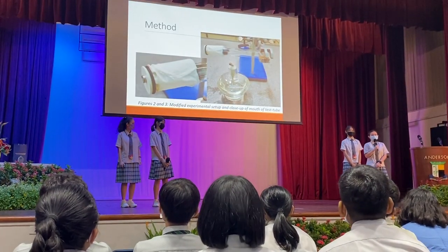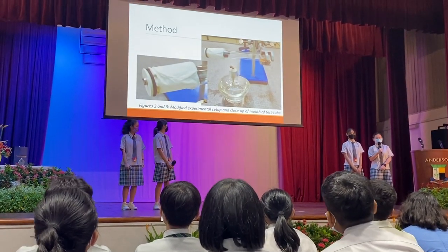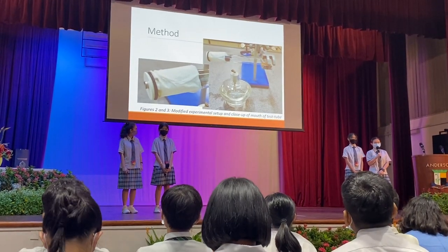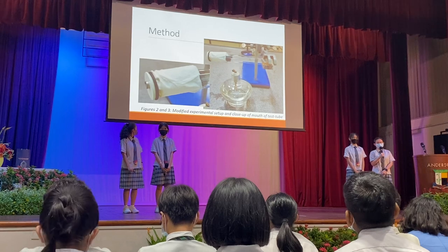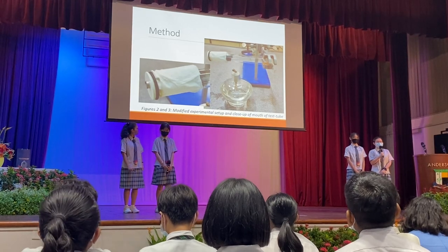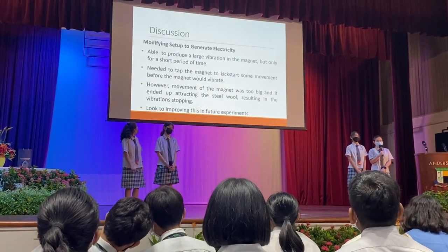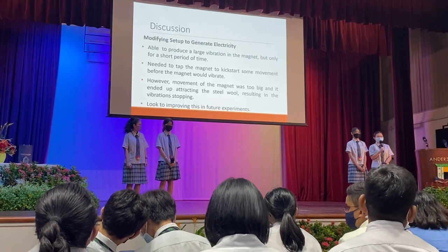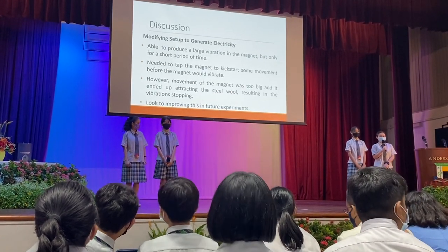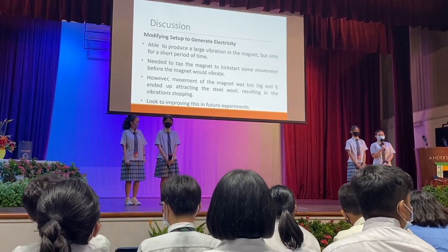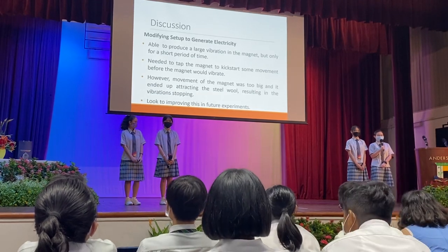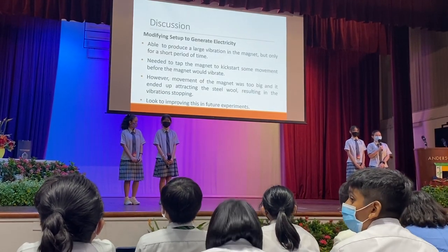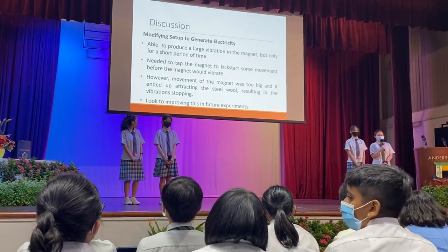For the modifications, we attached the balloon around the mouth of the test tube and placed the magnet in the middle of the balloon. We also shifted the steel wool forward. Through this setup, we observed that the magnet needed to be nudged to start movement before it could vibrate. However, the movement was strong and attracted the steel wool, which didn't allow the vibrations to last for long. This is a limitation that we look forward to improving on.